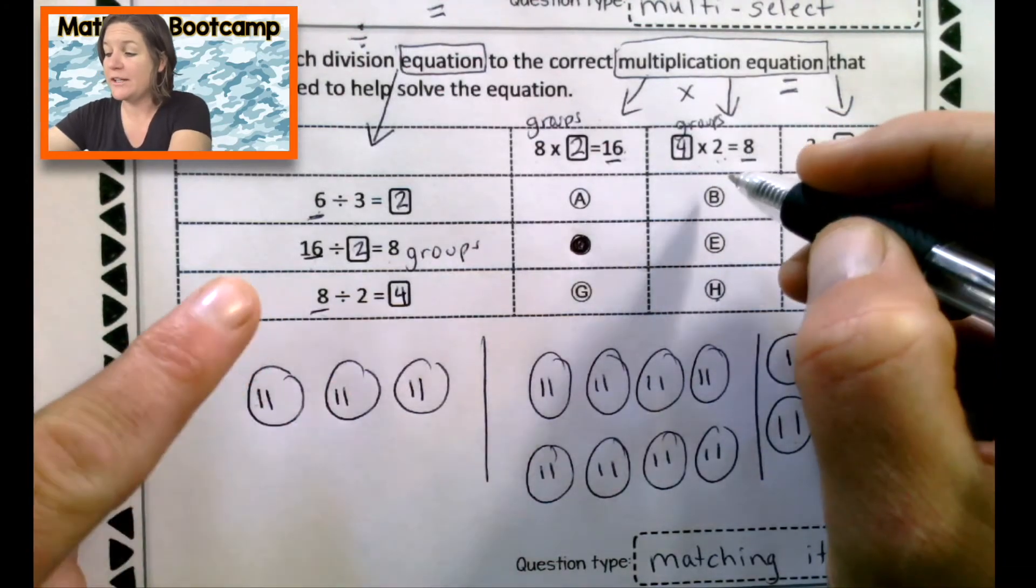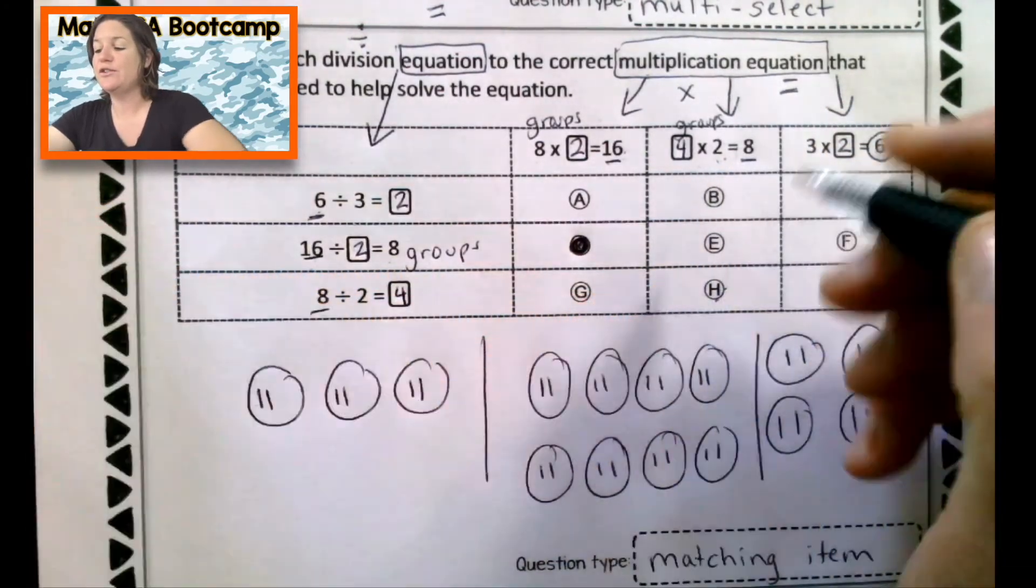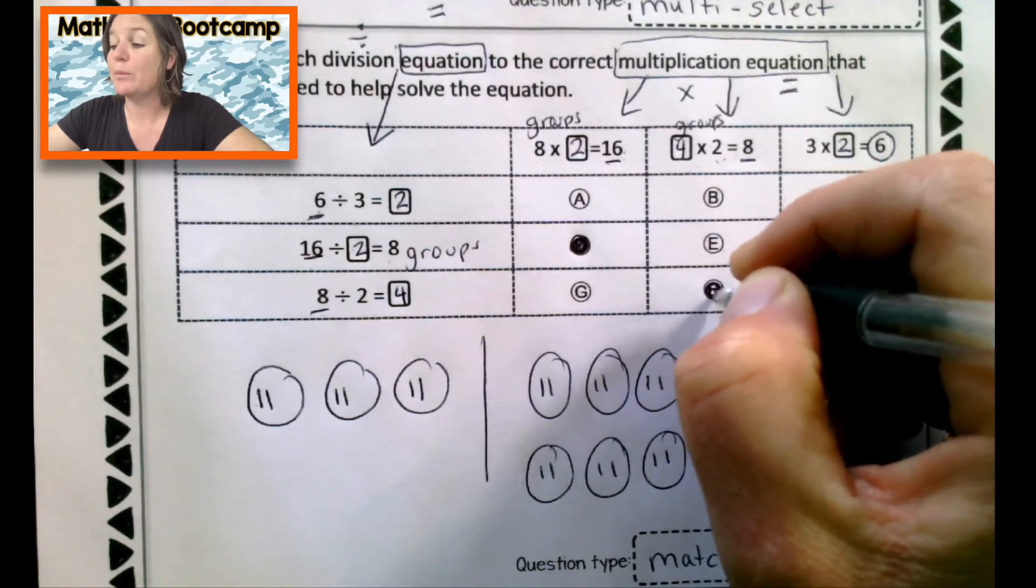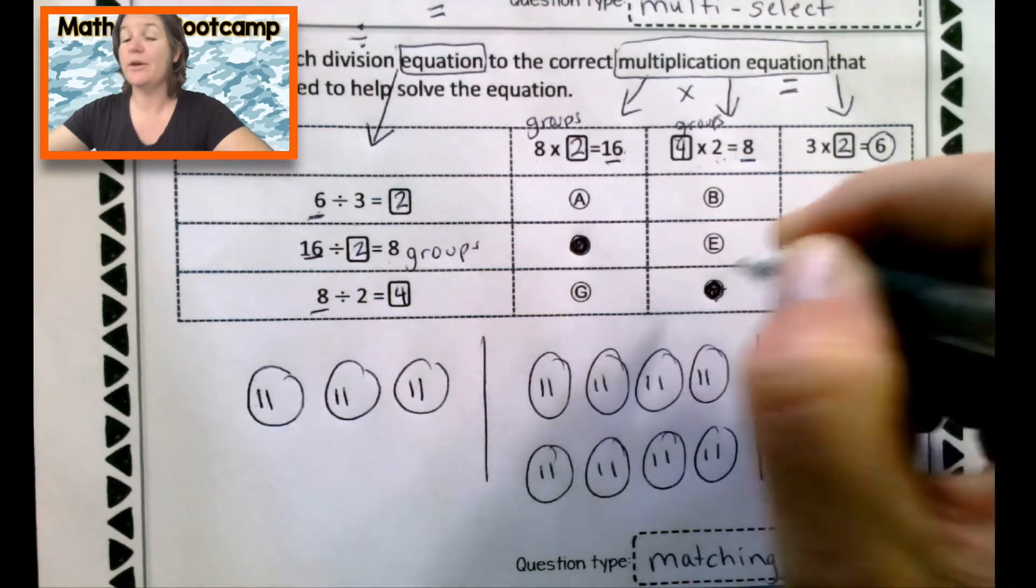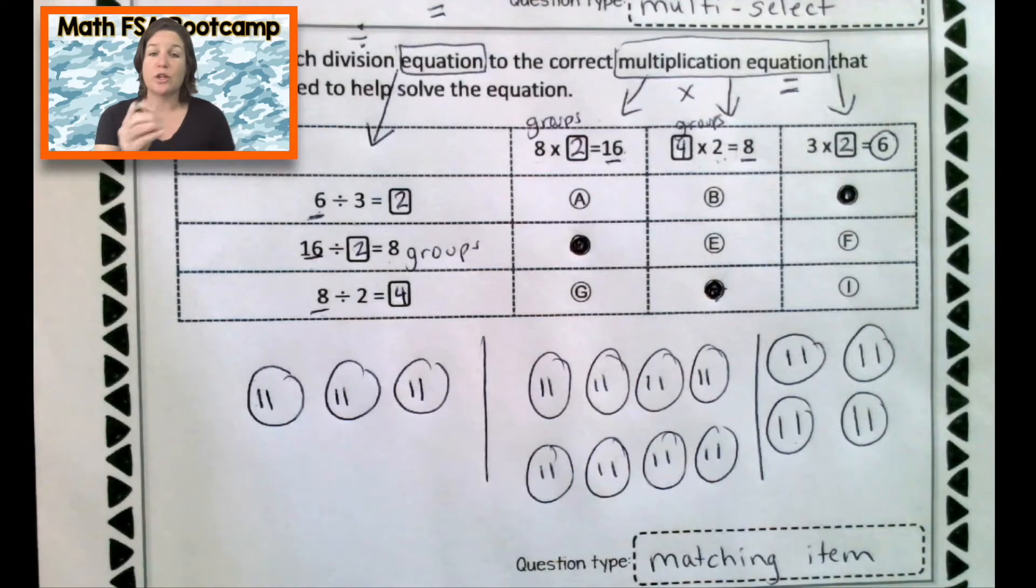So does that mean we have four groups of two, which equals a total of eight? Oh, sure. You betcha. Let's join them together. And they do indeed join at H. So our prediction was correct. But notice we took a mathematical journey to prove that.